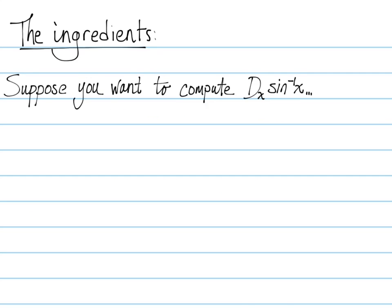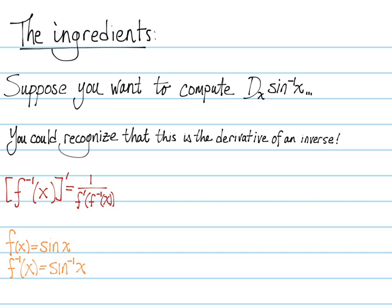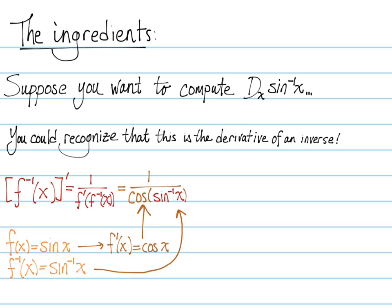Suppose we wanted to compute the derivative of arc sine of x. We recognize that we're trying to take the derivative of an inverse, which uses the inverse derivative rule. So if we let f(x) be sine x and f inverse be sine inverse, then the derivative of sine is cosine, and plugging the components in, we get cosine of sine inverse of x. So the derivative of sine inverse is 1 over cosine of sine inverse of x.